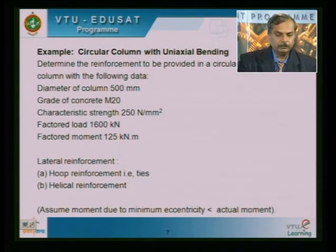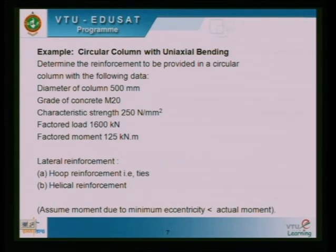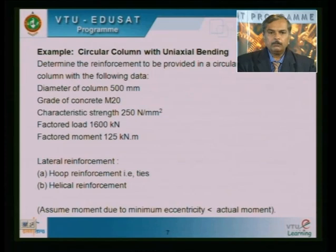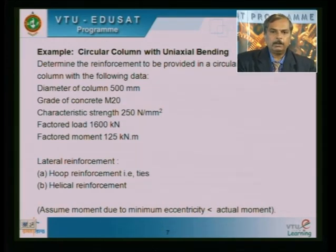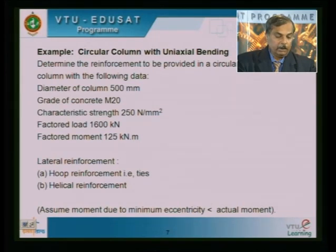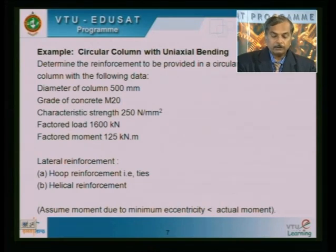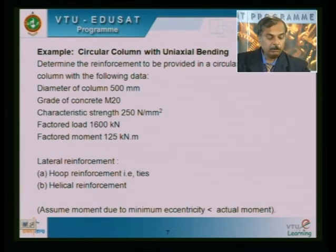Now let us see one more problem: the design of a circular column subjected to uniaxial bending. Determine the reinforcement for a circular column with diameter 500 mm, M20 concrete, Fe250 steel (fy = 250 N/mm²), factored load 1600 kN, factored moment 125 kNm. There are two sub-cases: (A) hoop reinforcement (lateral ties) and (B) helical reinforcement. For helical reinforcement, if the spiral condition is satisfied, the load carrying capacity is 5% more than the equivalent tied column.